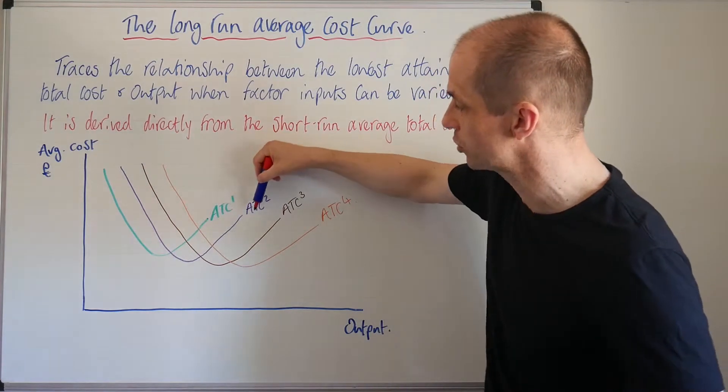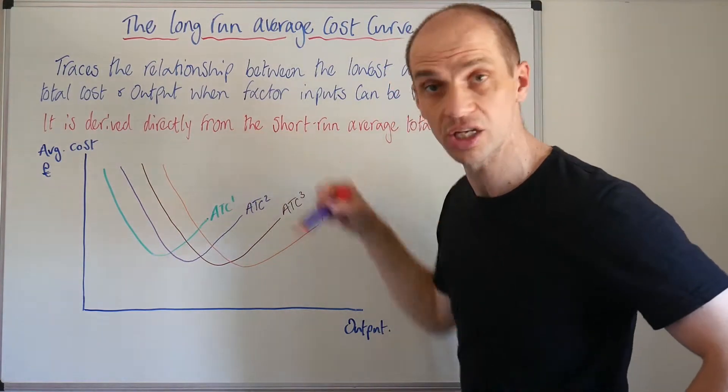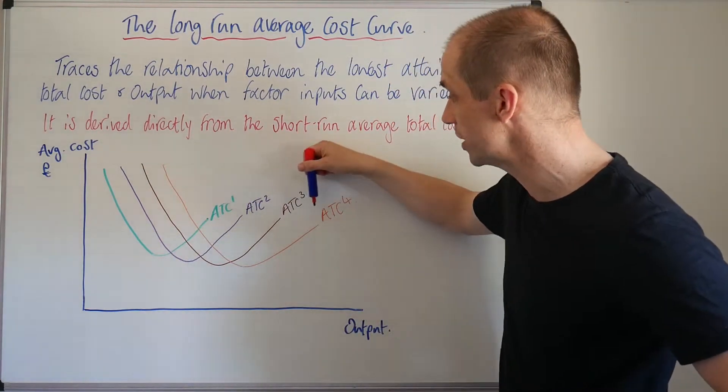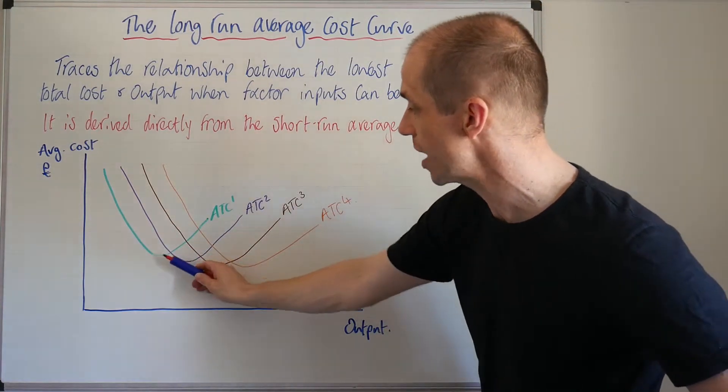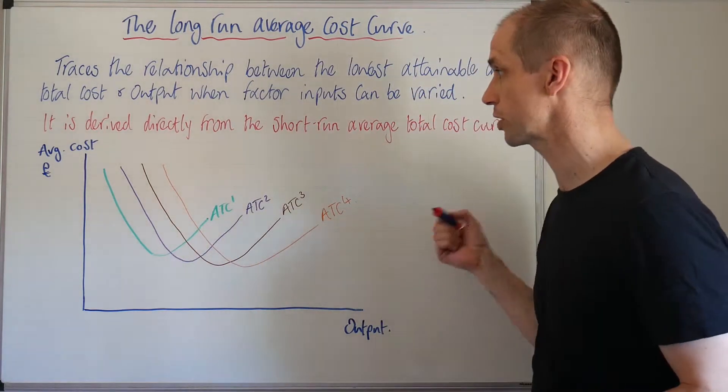So then we were able to increase the number of machines that we used, and as we do so, we can see that we gradually lower the actual costs of production.